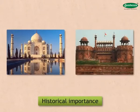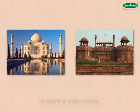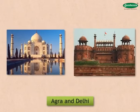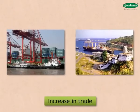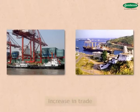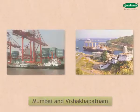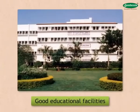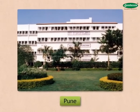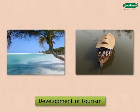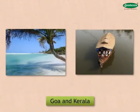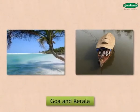Transformation can also occur due to historical importance — for example, Agra and Delhi. Increase in trade — for example, ports like Mumbai and Vishakhapatnam. Good educational facilities — for example, Pune. And development of tourism — for example, Goa and Kerala.